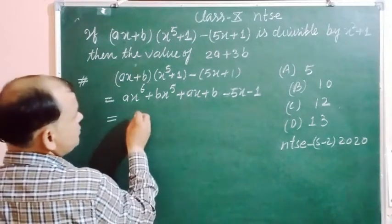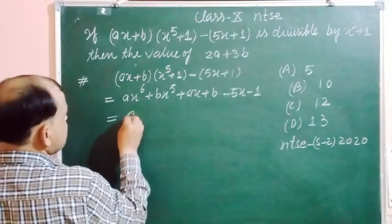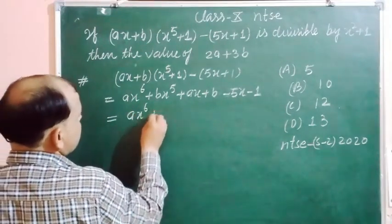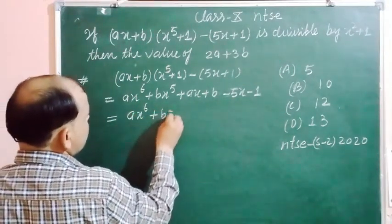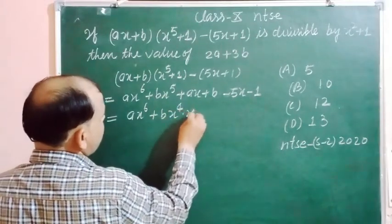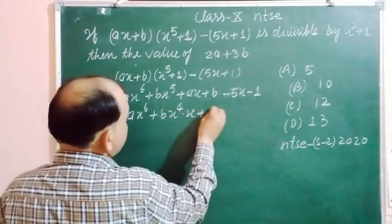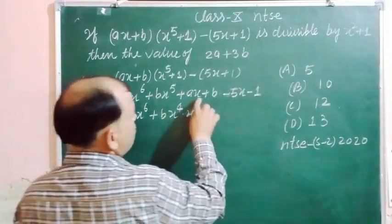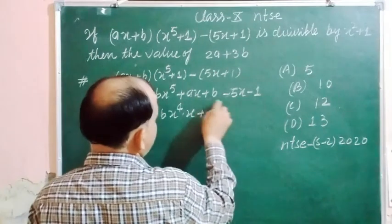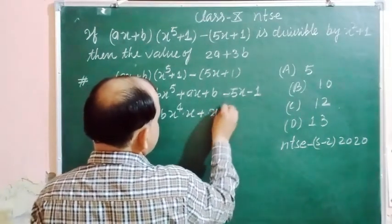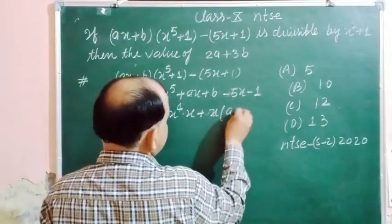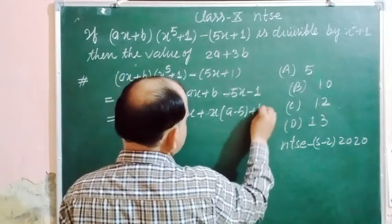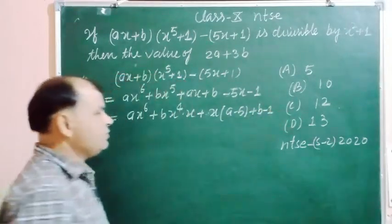So we write it as AX⁶ + BX⁵, and we take X common from the middle terms, giving (A minus 5)X, and the constant part is (B minus 1).